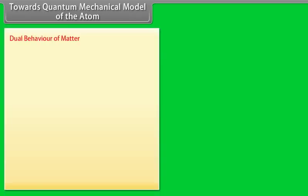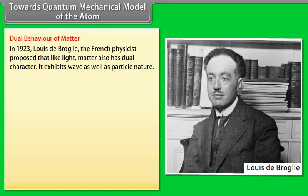Towards the quantum mechanical model of the atom — dual behavior of matter. In 1923, Louis de Broglie, the French physicist, proposed that like light, matter also has dual character. It exhibits wave as well as particle nature.